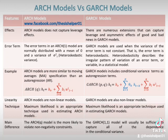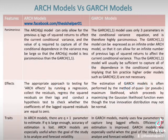The main difference between ARCH(Q) and GARCH(1,1) is that the ARCH(Q) model is more likely to violate non-negativity constraints. Whereas the GARCH(1,1) model will usually be sufficient to capture all of the dependence in the conditional variance. The ARCH(Q) model can only allow for the previous Q lags of squared returns to affect the current conditional variance, and the value of Q required may be large, so the ARCH(Q) model is less parsimonious than the GARCH(1,1).